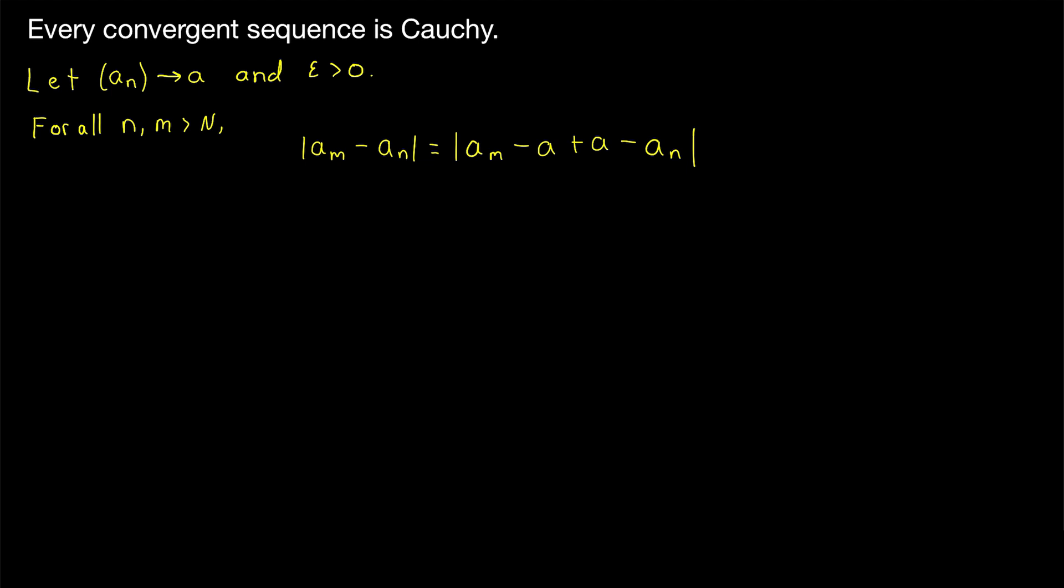The extra nice thing about this is now we have some addition in this absolute value expression, which means we can split this expression across that addition using the triangle inequality theorem. By the triangle inequality theorem we know the absolute value of this sum must be less than or equal to the sum of the absolute values. And remember that we're okay with making the expression bigger because we're trying to show that it's less than epsilon. So if this bigger thing can be shown to be less than epsilon, then of course the original expression is less than epsilon.